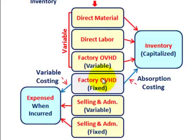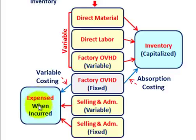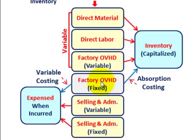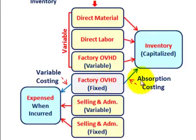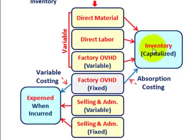For what gets expensed under variable costing: the fixed portion of factory overhead, plus selling and administrative expenses — both variable and fixed — are expensed when incurred. Under absorption costing, only selling and administrative costs are expensed when incurred, because the fixed factory overhead gets capitalized in inventory. That's the key difference.